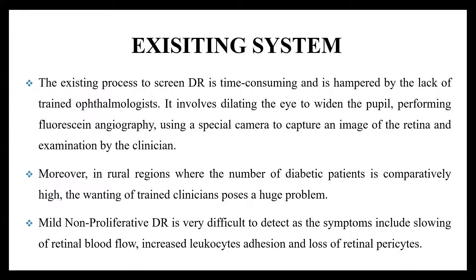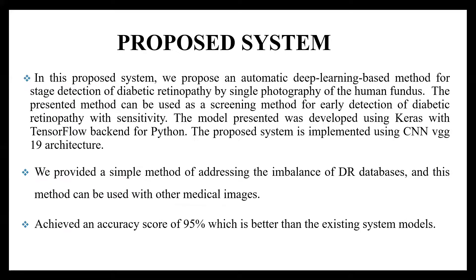In the existing system, detecting diabetic retinopathy is a time-consuming process for trained ophthalmologists as well as users. But in the proposed system, the types and stages of diabetic retinopathy are detected from single photography images using TensorFlow and CNN, achieving an accuracy score of 95%, which is better than the existing system.